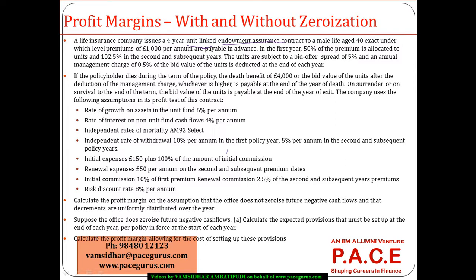The risk discount rate is taken as 8%. We need to: first, calculate the profit margin assuming the office does not zeroize the future negative cash flows, with decrements uniformly distributed over the year; and second, assuming the office does zeroize future negative cash flows, calculate the expected provisions that must be set up at the end of each year and then compute the profit margin.